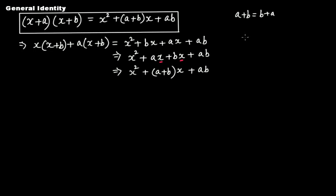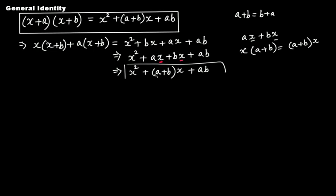So ax plus bx is x times (a + b), which by the commutative property of multiplication can be written as (a + b) multiplied by x. This completes the proof of the general identity, and you can use it directly in problems too.